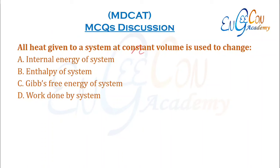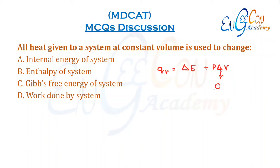All heat given to the system at constant volume is used to change what? At constant volume, all the heat given to the system equals the change in internal energy, because the change in volume is zero, so work done is zero. A is the correct option.